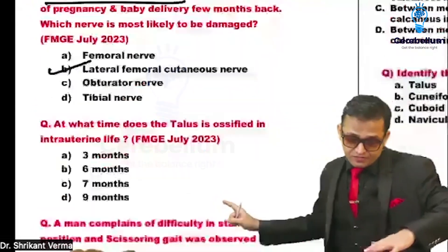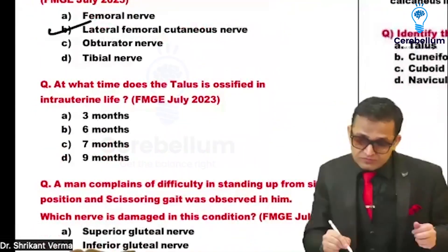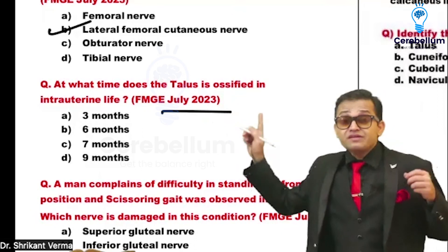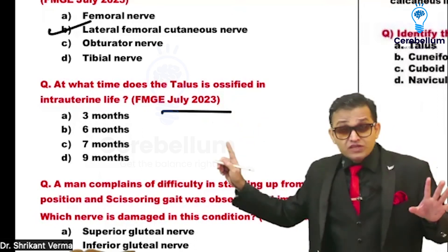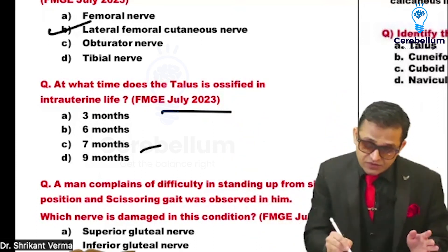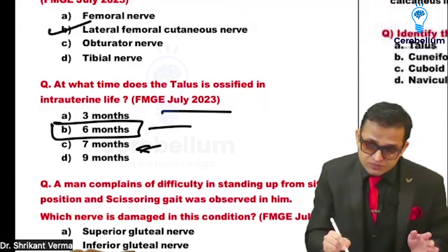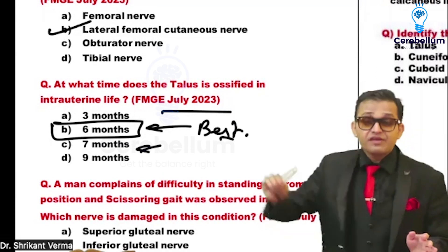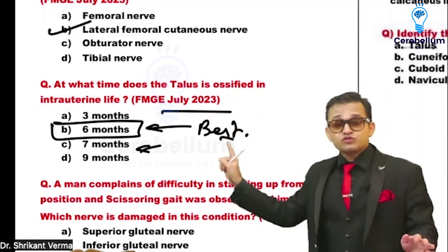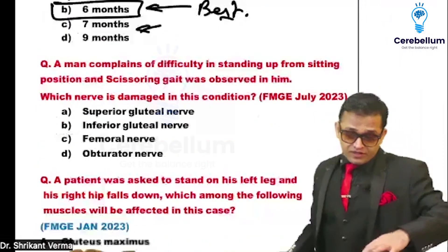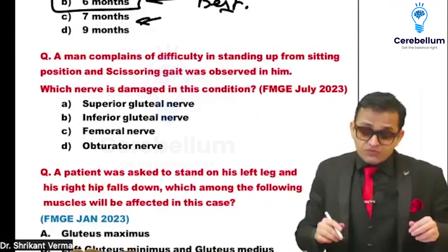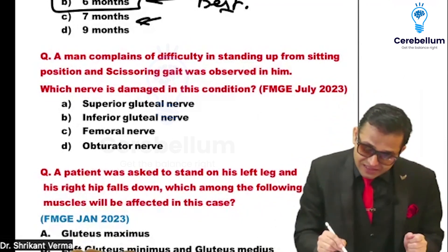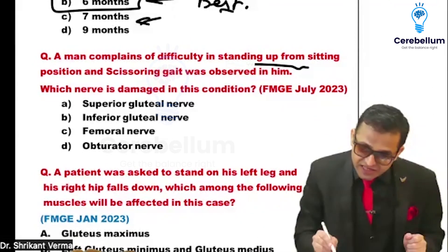The next FMG July 2023 question tells us when a particular bone ossifies. Remember, a few books say 7 months but Grey's Anatomy says 6 months, so that is the best answer. FMG July 2023 had one question from the foot bone and one question from the gluteal region.